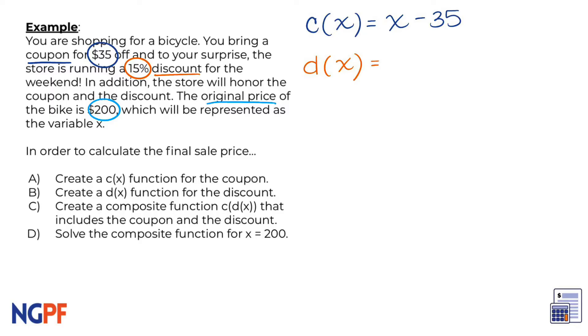You could use a couple different forms here. If we get a discount of 15% off that means the bike will only be 85% of the original price which is x, so we can say that d(x) equals 0.85 times x.